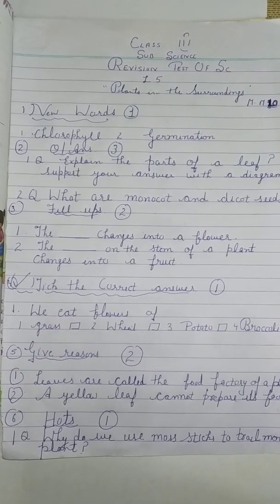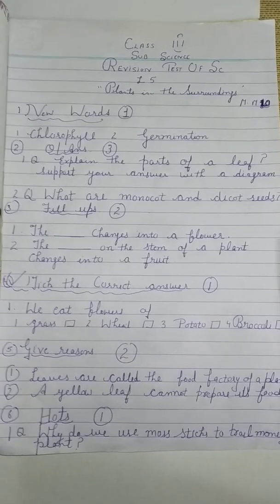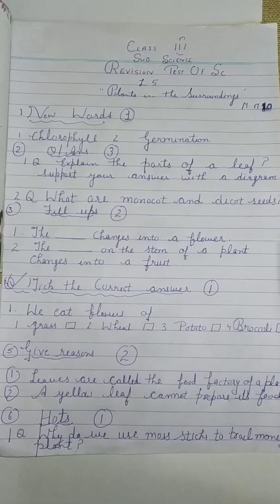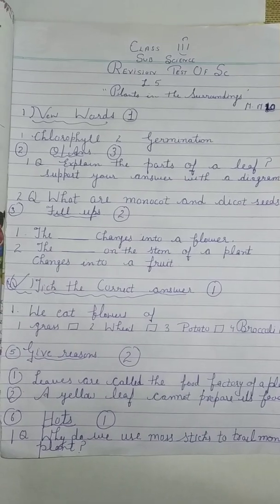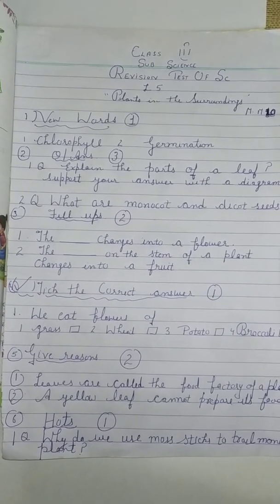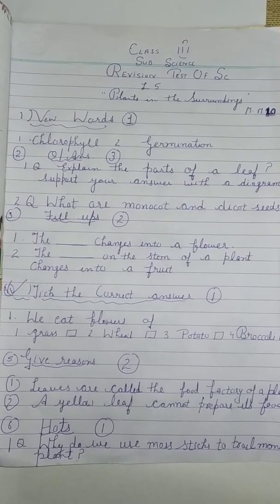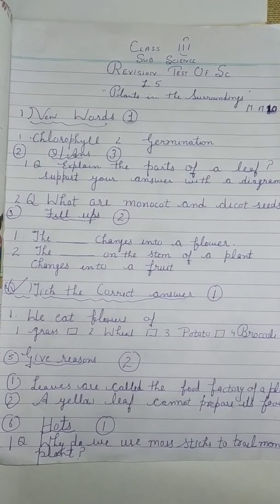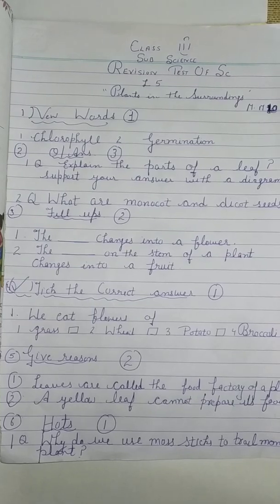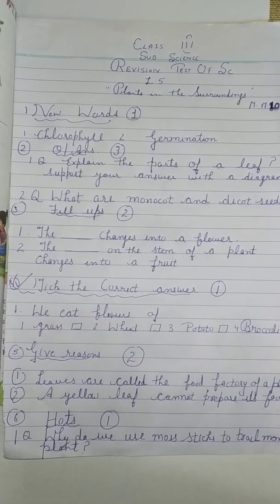Question 2: What are monocot and dicot seeds? Question 3, Fill in the blanks. Number 1: The blank changes into a flower. Number 2: The blank on the stem of a plant changes into a fruit.